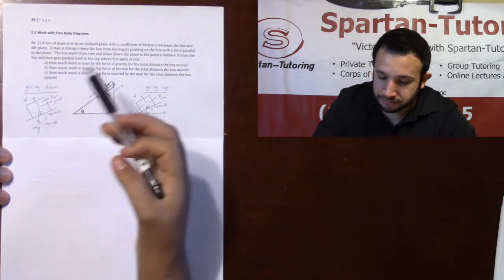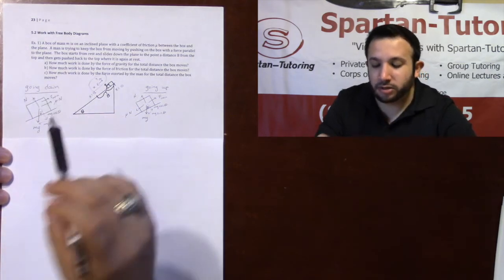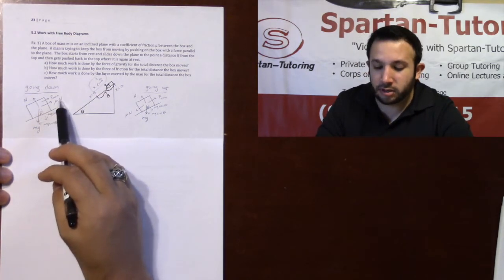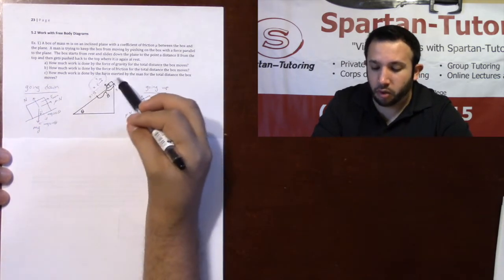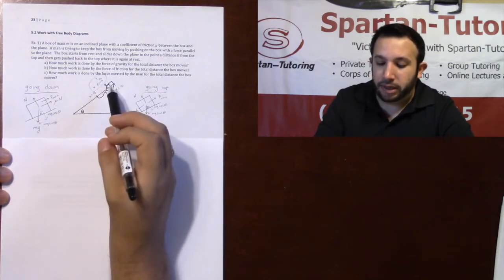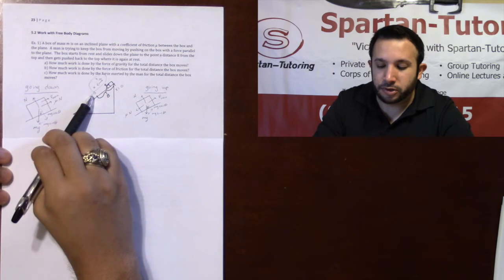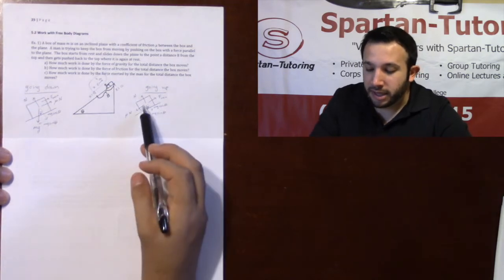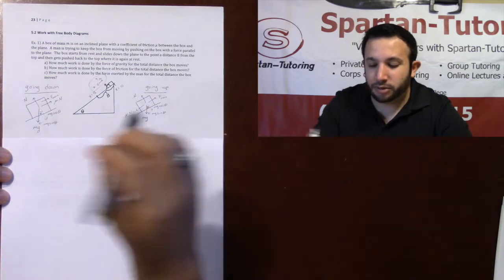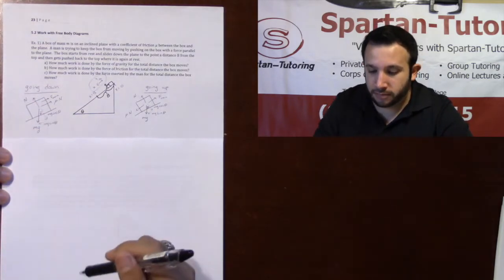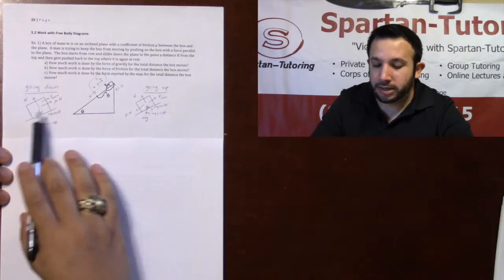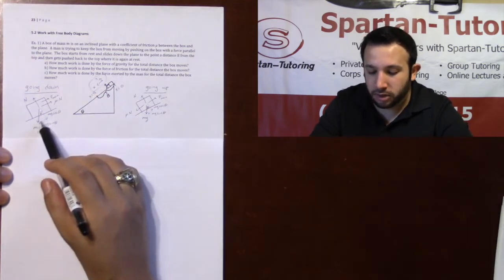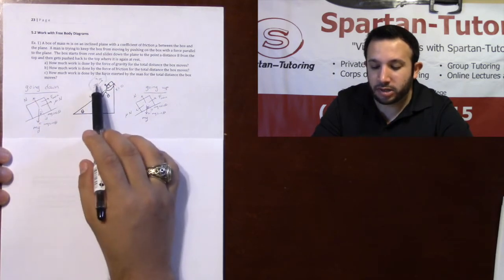Your free body diagram is going to be slightly different depending on whether you're going down or going up. Going down: MG is straight down, normal force is perpendicular, friction opposes motion — so friction is pointed up. The force the man is pushing with is always going up. Going back up, the only difference in the free body diagrams is that friction is now pointed down the ramp, because it's opposing the direction of motion. When doing work by a certain force, I'm only looking at the x-component of the forces — all arrows pointed in the direction of my x-axis.